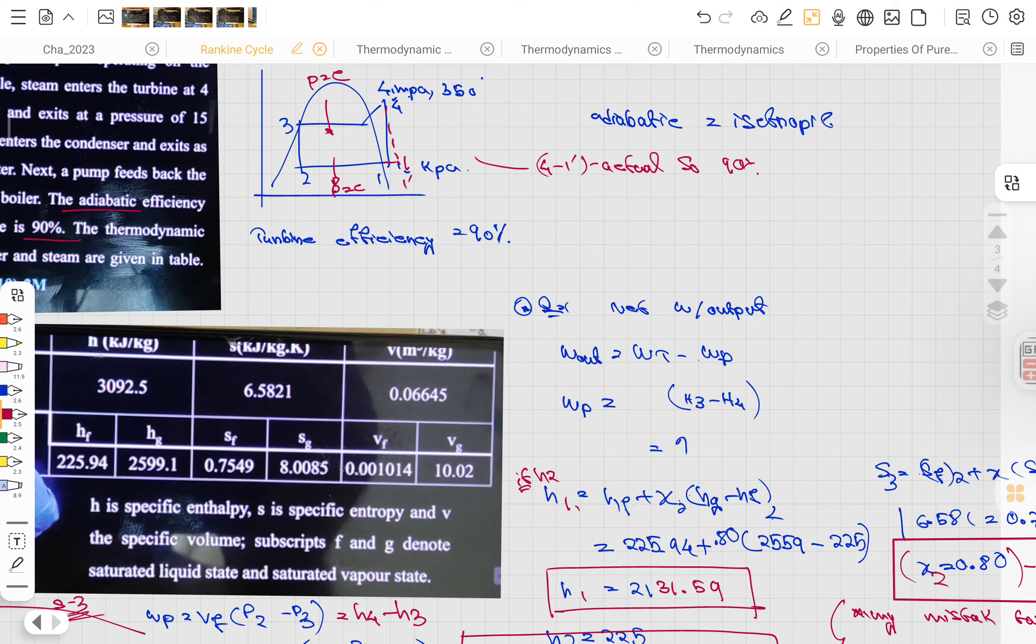What are the mistakes I've made? First is that I tried to calculate the enthalpy at h4. But you can see h4 is a dry saturated vapor and its enthalpy has been given here. Why are you calculating the h4 point?